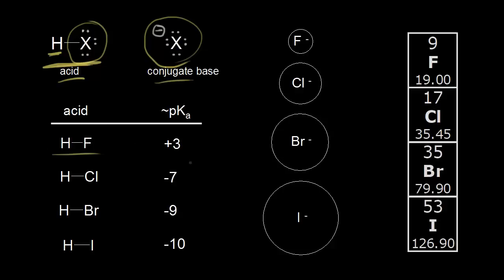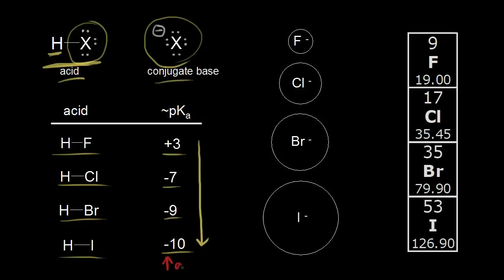Looking at these four binary acids: hydrofluoric acid has a pKa of approximately positive three, hydrochloric acid has an approximate pKa of negative seven, hydrobromic acid is at negative nine, and hydroiodic acid is at negative ten. The lower the pKa value, the stronger the acid. So as we go down, we decrease in pKa and increase in acid strength. Therefore hydroiodic acid is the strongest of the four, having the lowest pKa value.